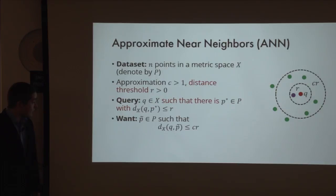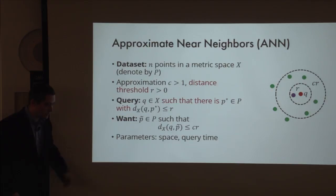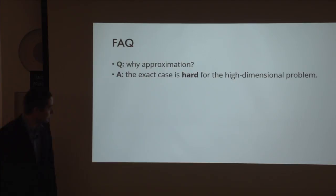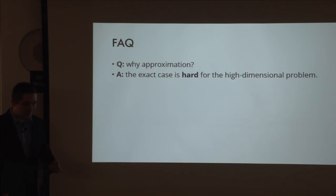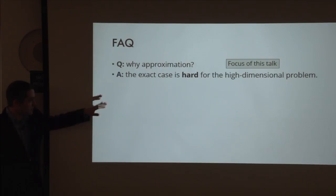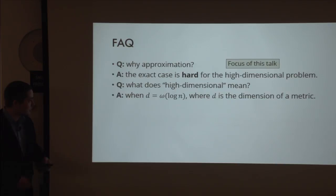The parameters we care about are space and query time—how much space the data structure occupies and how much time it takes to answer a query. We allow approximation because the exact case is hard in the high-dimensional regime. If you could solve this problem non-trivially exactly, you would solve SAT better than what we know how to do now—conditional hardness results are known. High-dimensional here means that the dimension of your dataset is super-logarithmic in the number of points.